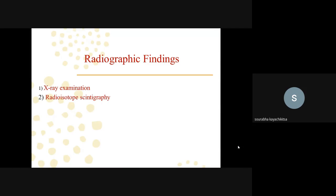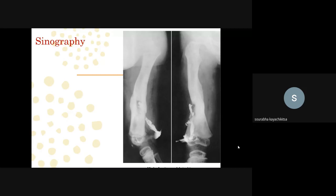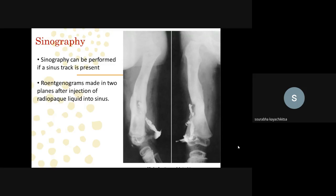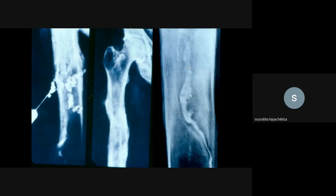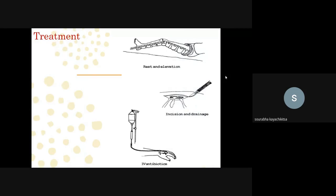Radiographic findings include X-ray, radionuclide isotope scanning, CT scan, MRI, and sinography. Sinography is performed to identify the sinus tract — a dye is injected and the sinus tract can be easily visualized on imaging. You can clearly see the sinus tract in the sinography pictures shown.